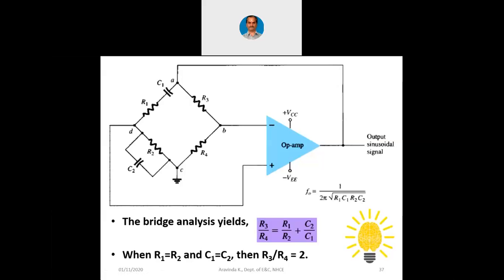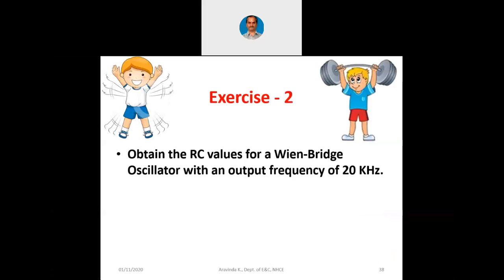I am showing you the bulb symbol only to have some humorous content for our class. That means our bulb is glowing — our brain is glowing. That bulb is as good as a brain; you can see the shape there — it is actually the brain which is indicated. So our brains are glowing with more and more learning.